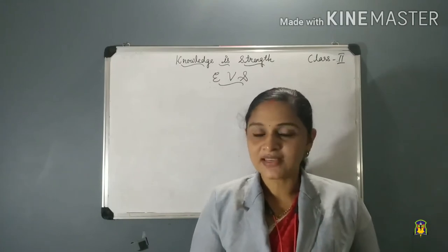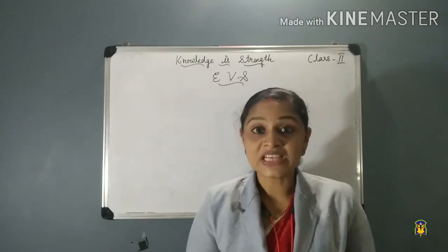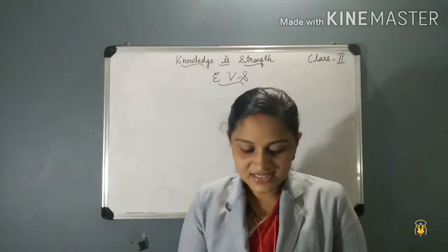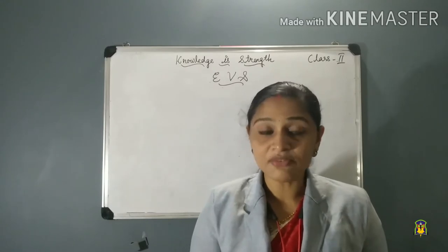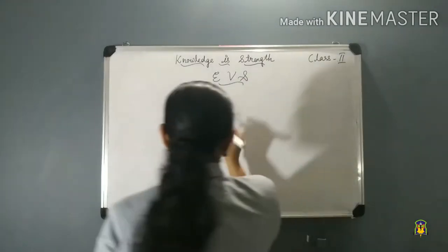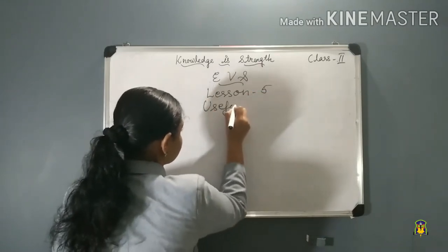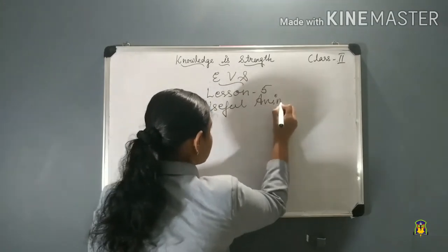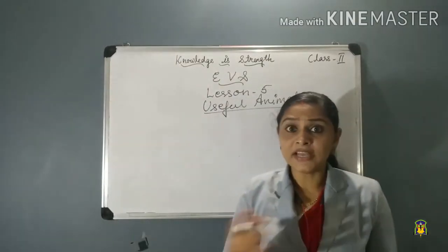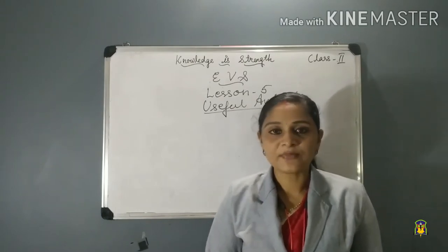This lesson is about animals. We get many things from animals, so the lesson name is 'Useful Animals.' In this lesson we will learn which useful things we get from animals. This is Lesson 5, 'Useful Animals,' from the 101B textbook. We can see many types of animals around us, and these animals give us many things.